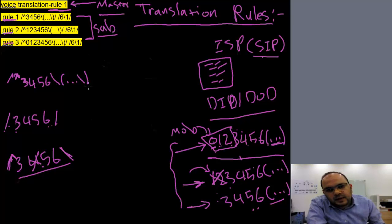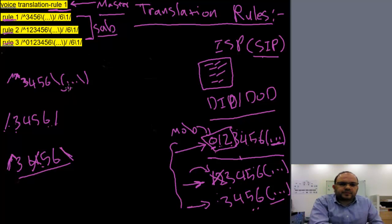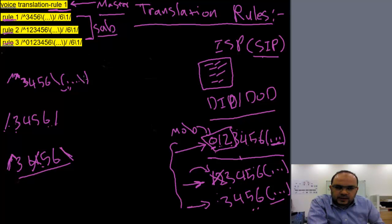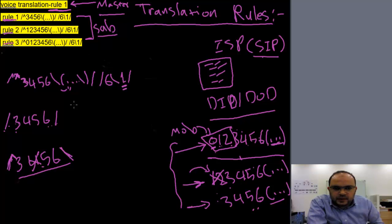After removing it, the CUBE takes the remaining three digits — any three digits that are dialed — and puts them in set number one. The set one is represented as slash 6, backslash 1, slash. So if an external caller dialed 3, 4, 5, 6, 1, 1, 1 — the CUBE understands this and makes the translation.